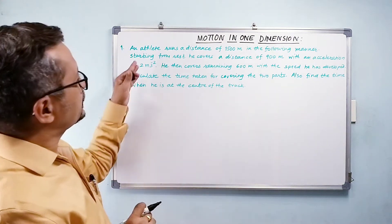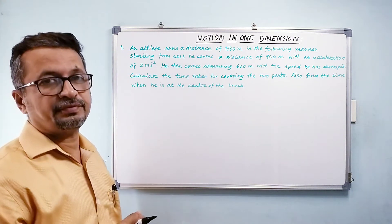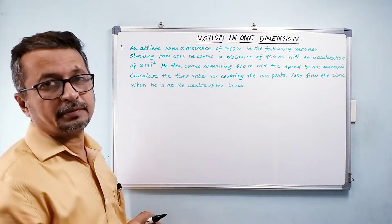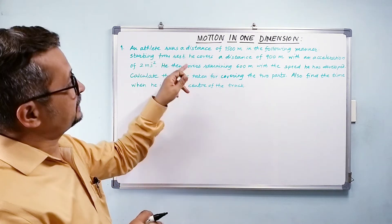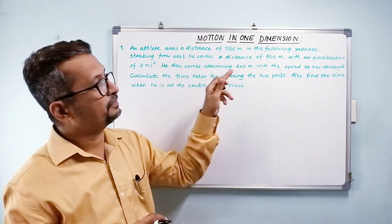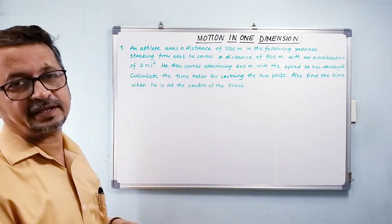So let us start with this problem. An athlete runs a distance of 1500 meters in the following manner. Starting from rest, he covers a distance of 900 meters with an acceleration of 2 meters per second squared.